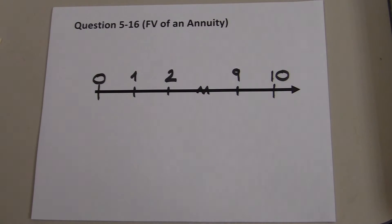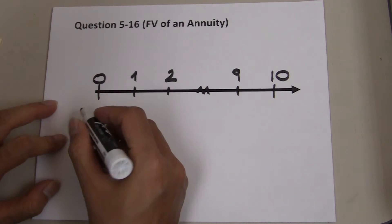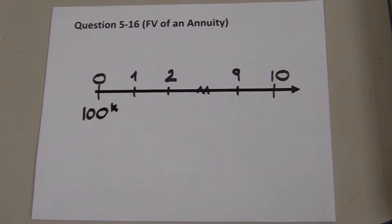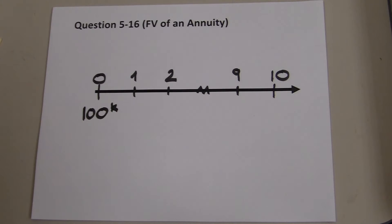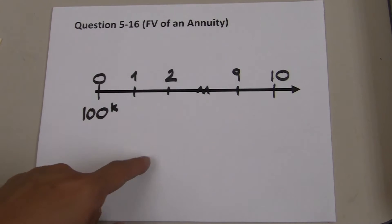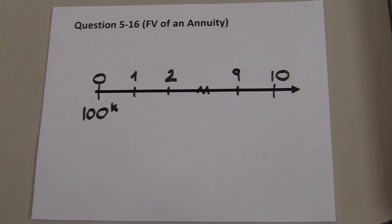Right now the house costs $100,000. The value of the house is $100,000 right here, and of course the price is not the same forever. The price is expected to increase in value each year at the rate of 5%.